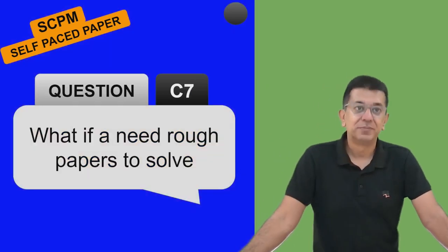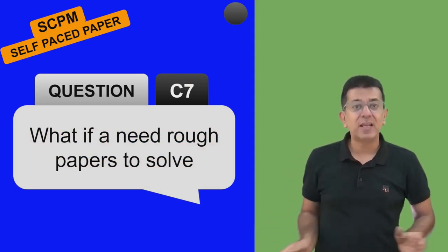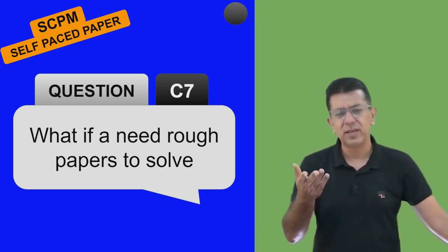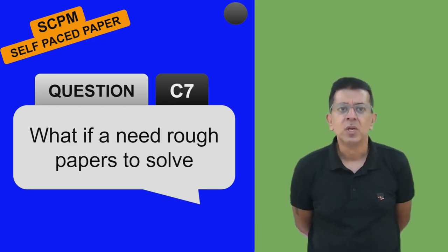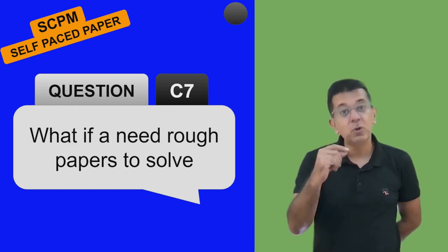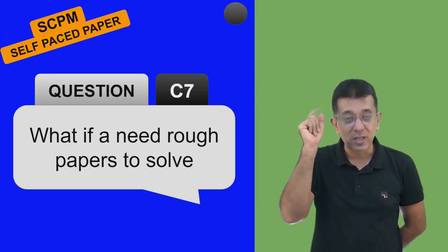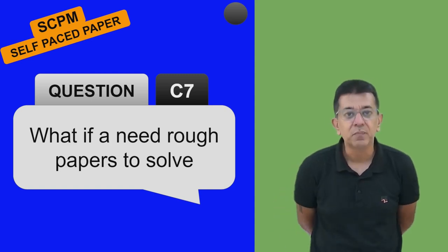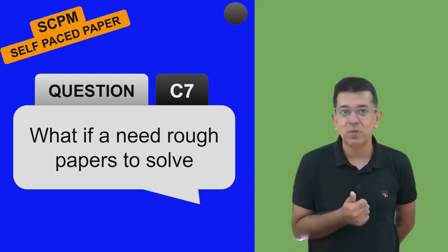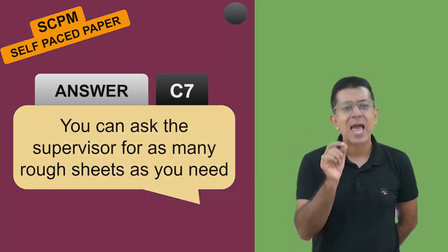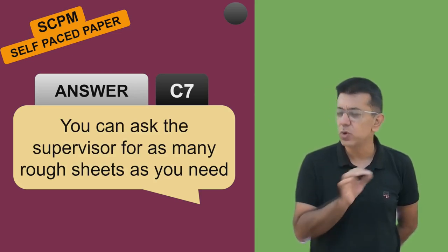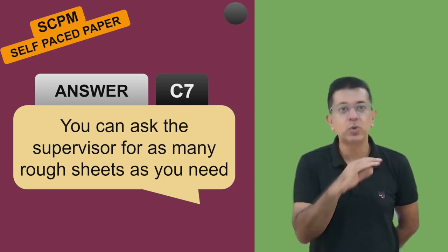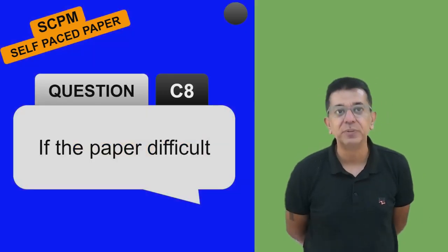For practical questions like activity-based costing or value chains, you will need to do rough working since you only enter the final answer on the computer. The center must give you as many rough sheets as you need - you can ask the supervisor for as many rough sheets as required and they will keep supplying them. There is absolutely no problem with that.